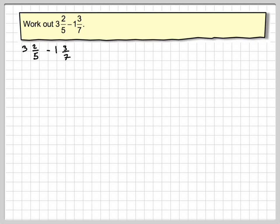There are several different ways of doing this. One way is to separate it: do 3 take away 1, plus 2 fifths, and then we're still taking away 3 sevenths.